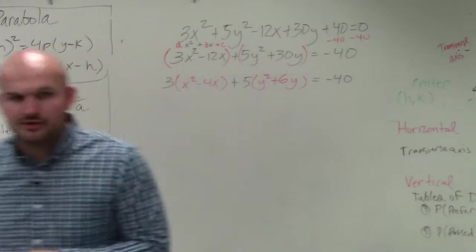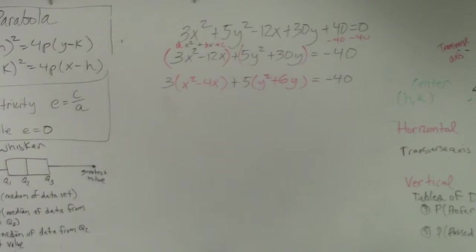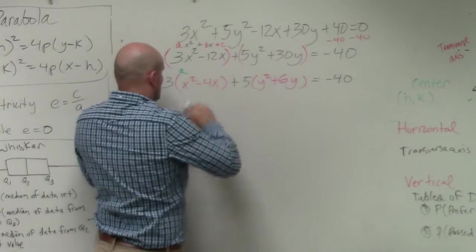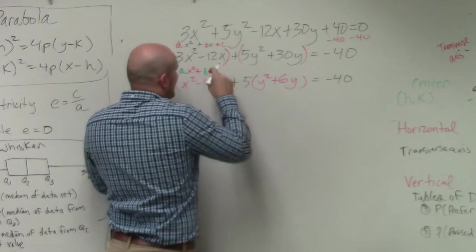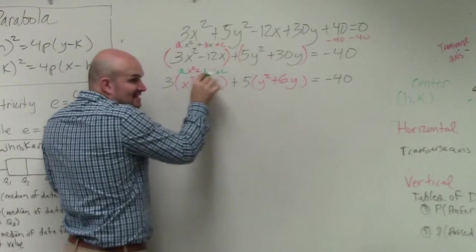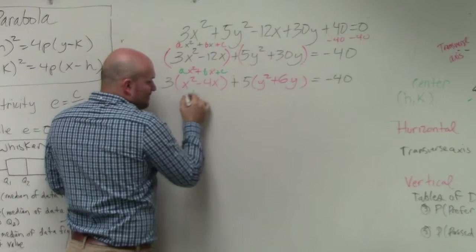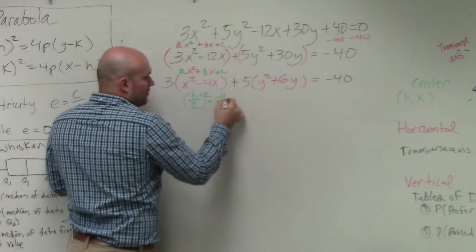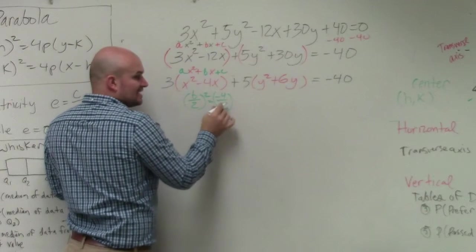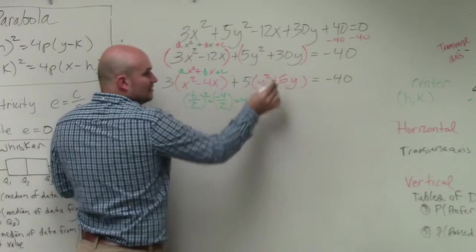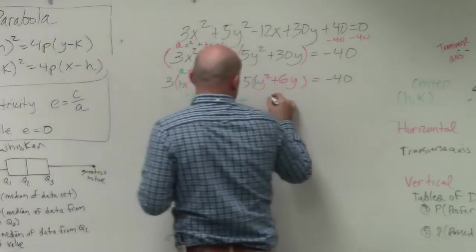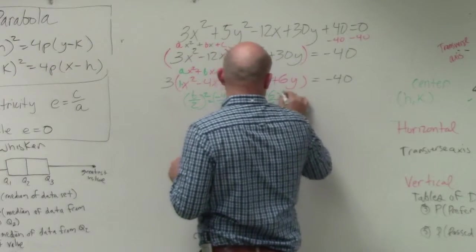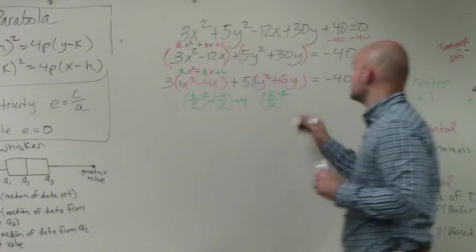Once we know that a is 1, what we can do is the process of finding the value c that completes the square. We have ax² plus bx plus c — we need to figure out that c. So we take b, divide it by 2, and square it. Negative 4 divided by 2 is negative 2; negative 2 squared is 4. We do the same thing for y: 6 divided by 2 is 3; 3 squared is 9.